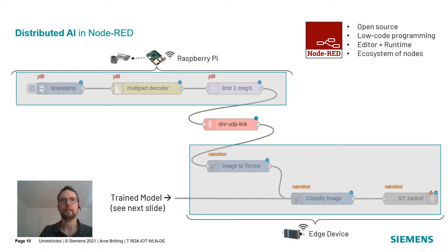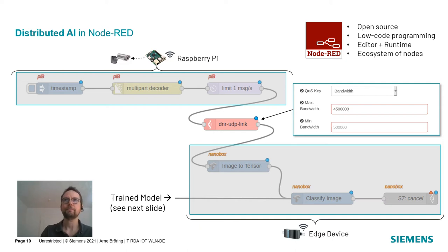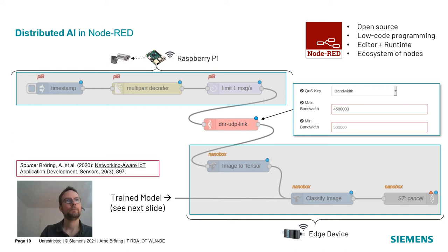The nice thing about this network link is that it allows us to specify all kinds of network KPIs or QoS requirements — for example, specifying a minimum or maximum bandwidth required by this network link. This essentially allows us to define from an application perspective certain network requirements. These application-specific requirements get translated into concrete SDN controller commands. If you want more details on this, you can see the referenced paper.